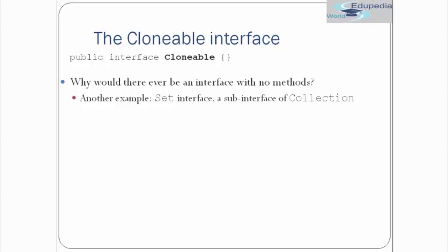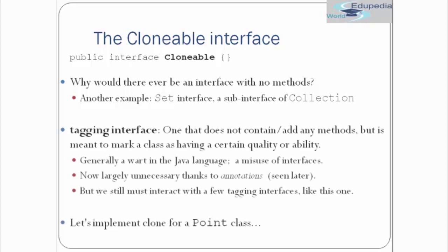Another example is the Serializable interface, which is a tagging interface — one that does not contain any method but is meant to mark a class as having a certain quality or ability. Generally considered a misuse of interface in Java, but it actually has a special purpose: to mark a class for certain quality. Largely unnecessary today thanks to annotations, but we still interact with a few tagging interfaces like Cloneable.